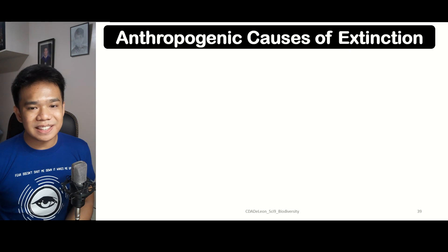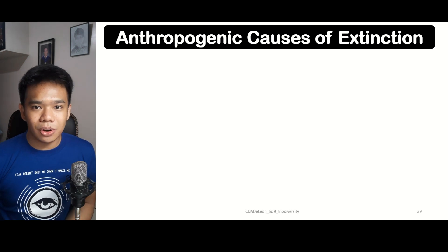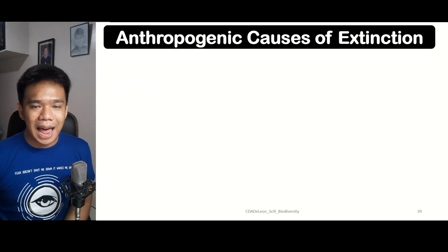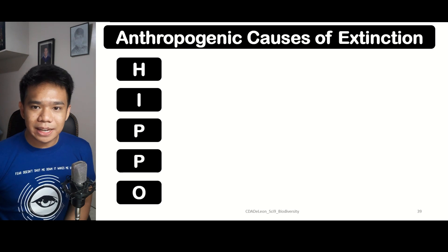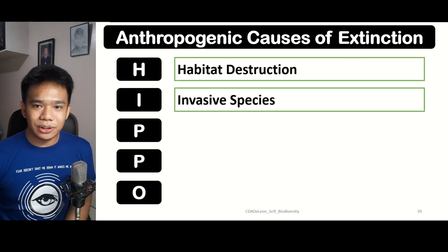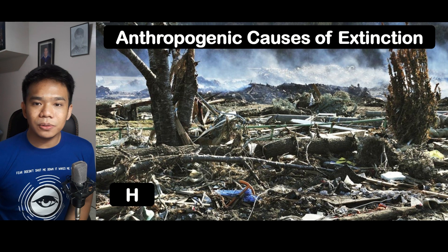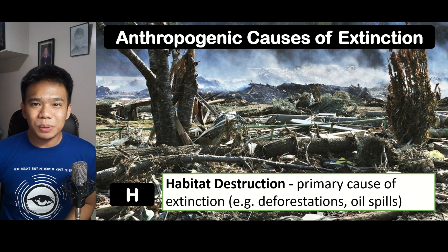Next, we have the anthropogenic causes of extinction. The term anthropogenic — anthro meaning man — refers to factors caused by human activities. These anthropogenic causes can be summarized using the acronym HIPPO: H for habitat destruction, I for invasive species, P for population growth, and P for pollution. Habitat destruction is considered the primary cause of extinction, connected to human activities such as deforestation and oil spills.